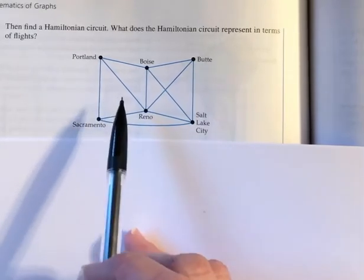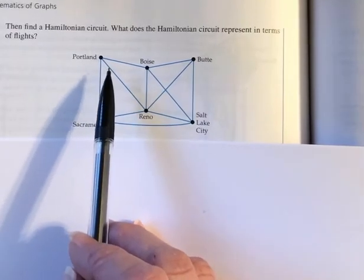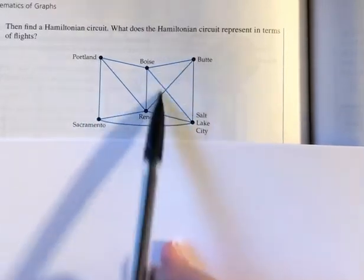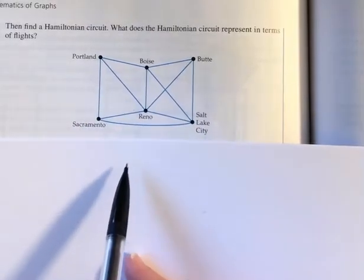Durock's Theorem says we take the number of vertices. 1, 2, 3, 4, 5, 6. Divide by 2.